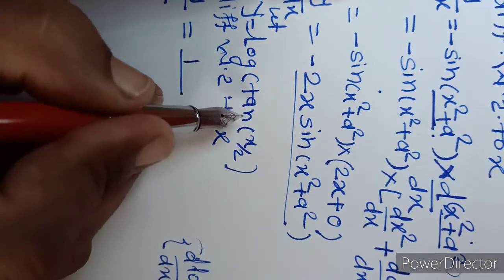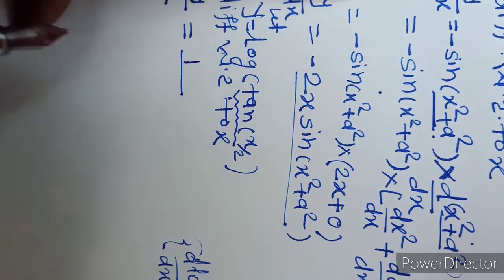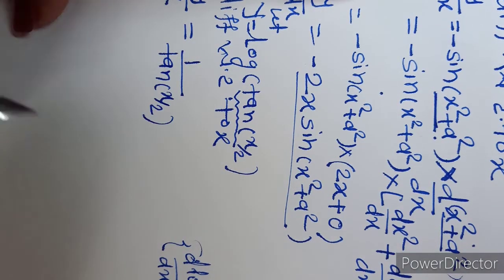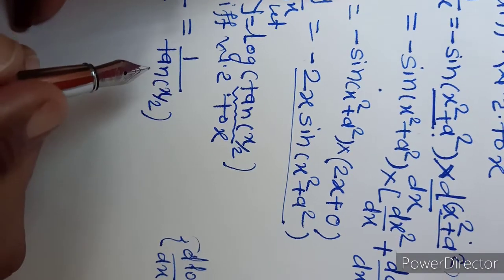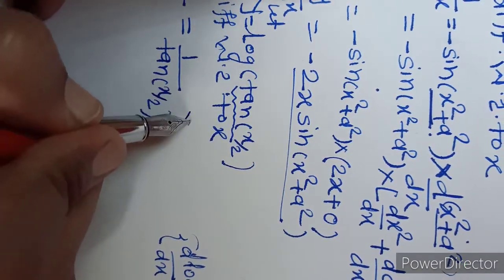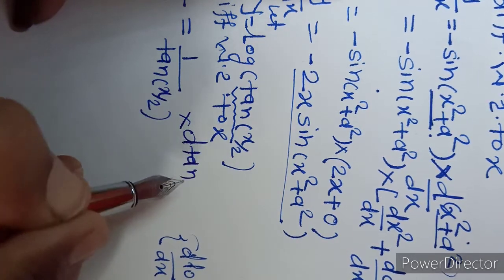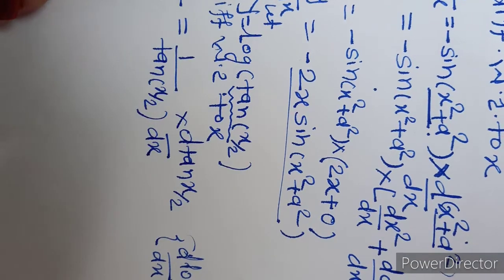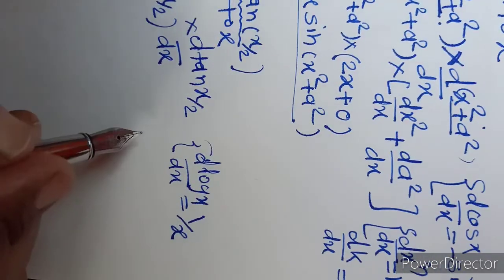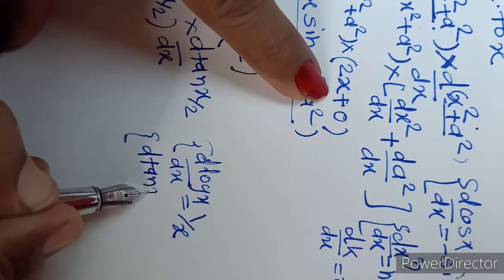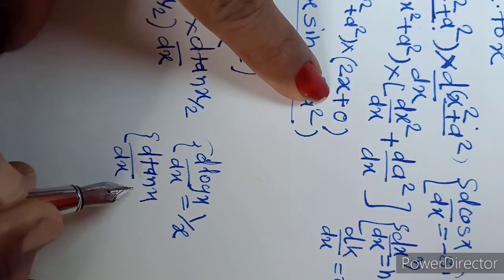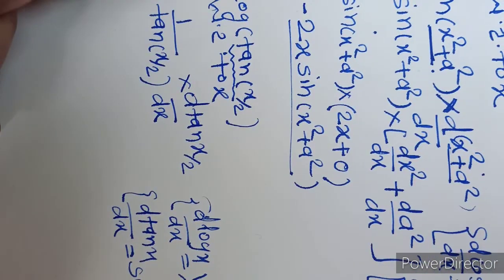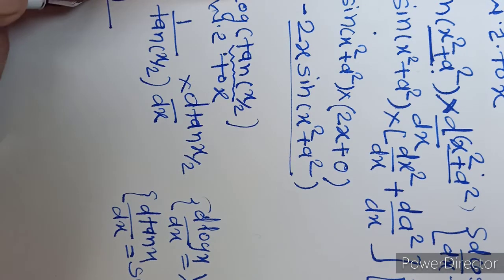So using 1 upon x, the function inside the log is tan(x/2), so instead of x we write tan(x/2) in the denominator. Then by the chain rule, we multiply by the derivative of tan(x/2). The derivative of tan x is sec²x, so we write sec²(x/2) — using tan's formula — and keep tan(x/2) in the denominator as it is.